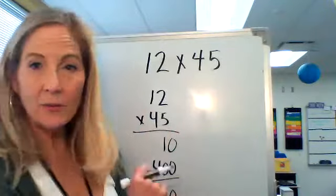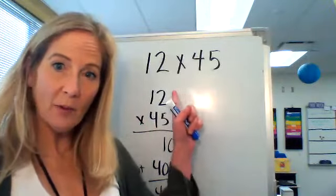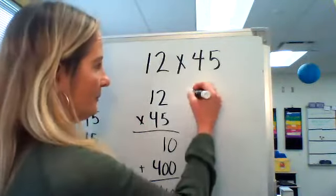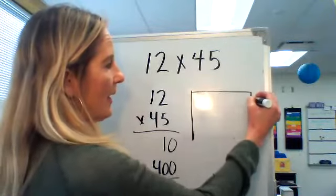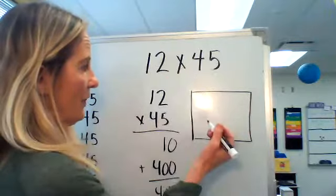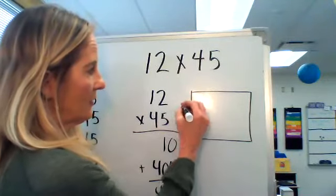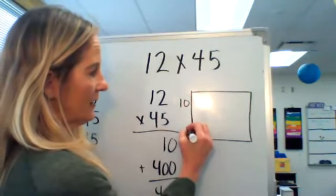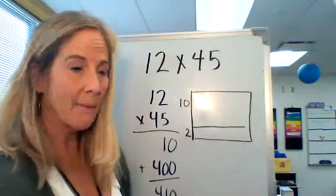Let's look and see what happens when we do this same problem with an open area model. With an open area model, I'm going to take my factors, 12 groups, and instead of doing the whole 12, I'll divide it into ten groups and two more groups, just like that.